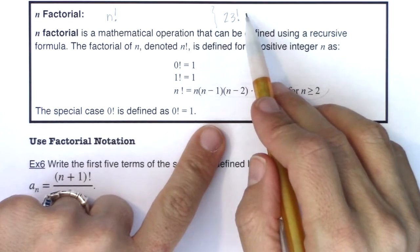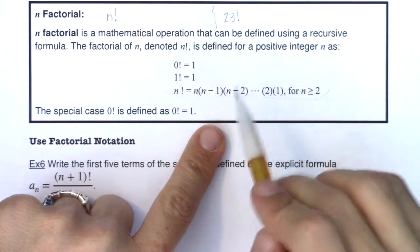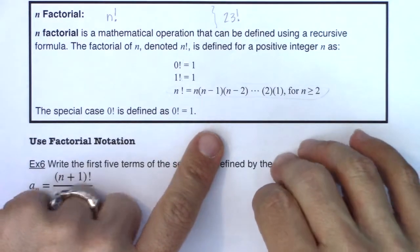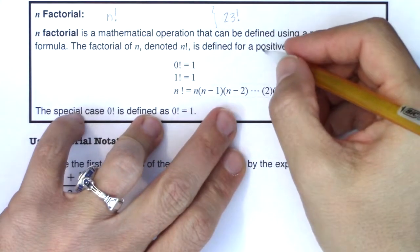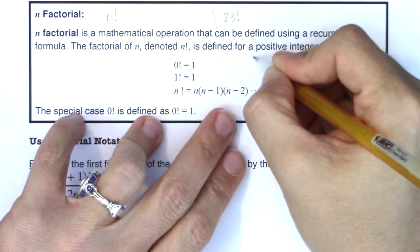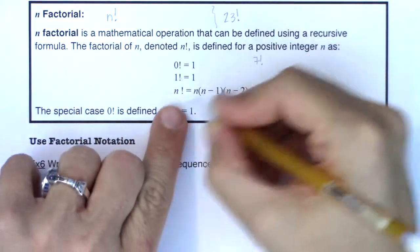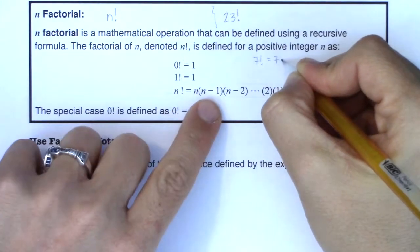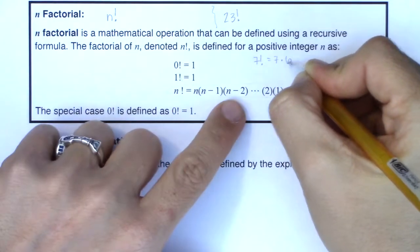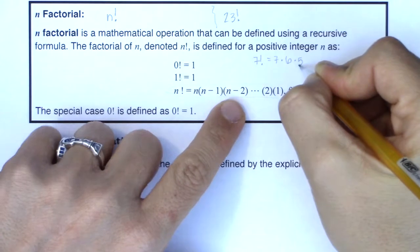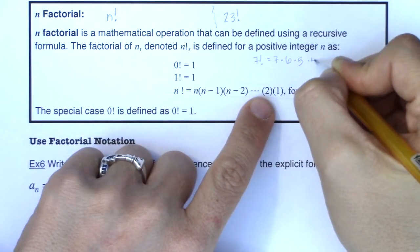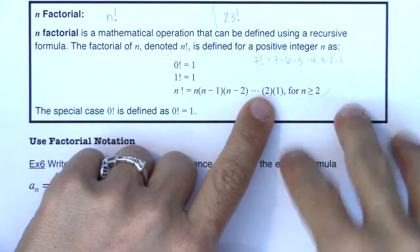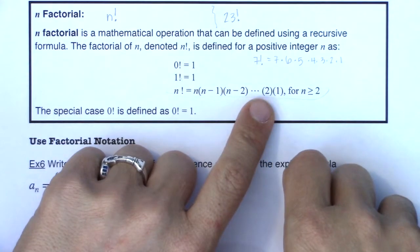But what this is saying is n factorial is a massive product. It's a product of n times n minus one times n minus two, all the way down to two and one. So let me give you a couple of examples. And then I'll kick it back over to what my extra credit in Algebra 2 was that I got wrong, but I can still hold on to like 25 years later. I've grown as a person.